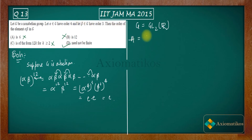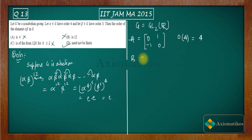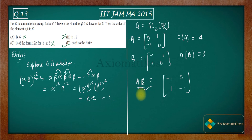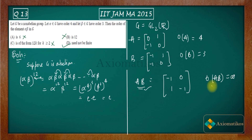Take matrix A = [[0, 1], [-1, 0]]. If you multiply A by itself four times, you get the identity, so the order of A is 4. Now take matrix B = [[-1, 1], [-1, 0]]; the order of B is 3. If you compute the product AB, you get [[-1, 0], [1, -1]], and after multiplying a few times you will notice it never returns to identity — so the order of AB is infinite.